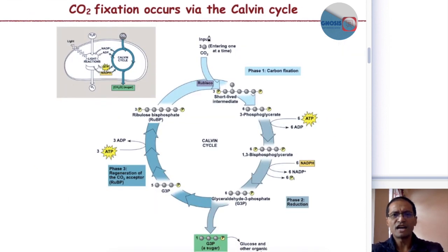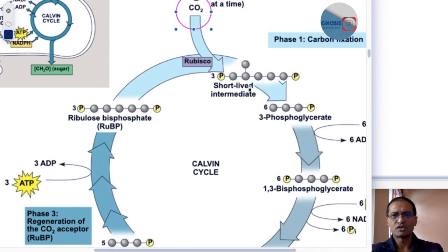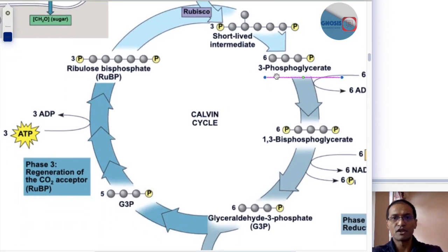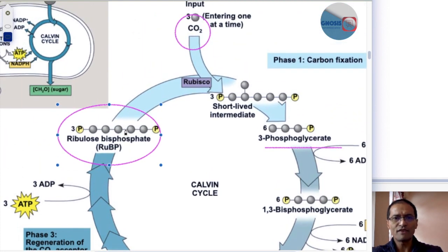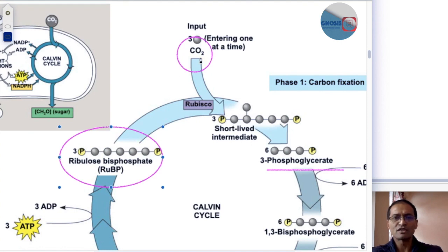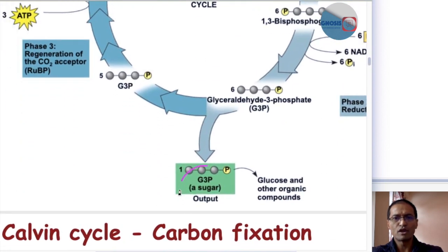Carbon dioxide fixation occurs via the Calvin cycle in a series of steps. Carbon dioxide enters the cycle and forms a very short-lived intermediate. This short-lived intermediate then gives rise to 3-phosphoglycerate, followed by a succession of molecules, and finally regeneration of ribulose-1,5-bisphosphate — the substrate to which carbon dioxide binds in the presence of the enzyme RuBisCO. Three molecules of carbon dioxide are required to produce one molecule of glyceraldehyde-3-phosphate.